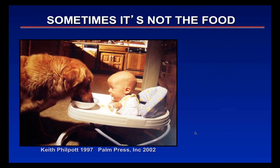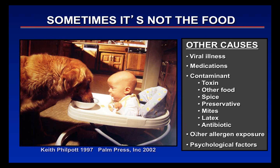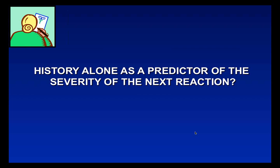Sometimes the reaction is not to the food itself. Other causes include dog saliva, viral illness causing urticaria, non-steroidal anti-inflammatory medications causing hives or angioedema, toxins or spices in the food, dust mites, latex, or antibiotics. Reactions during pollen season might be mistakenly attributed to food rather than pollen. Psychological factors can also play a role — worry about certain foods may cause nausea, anxiety, hyperventilation, and breathing difficulty.